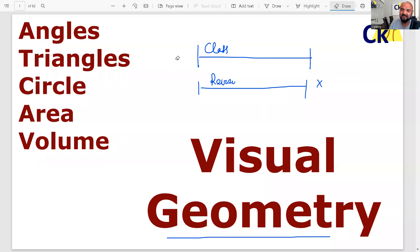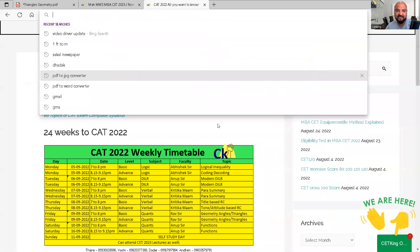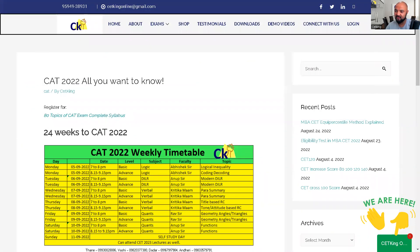What we have done at CETKing, I am going to give you weekly targets. cetking.com slash cat2022 is a target for CAT. You have a link to your WhatsApp group.